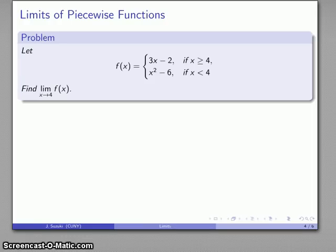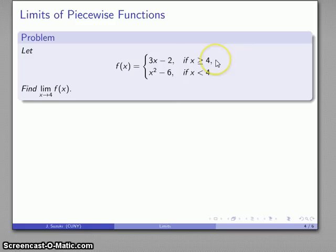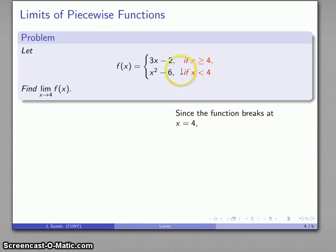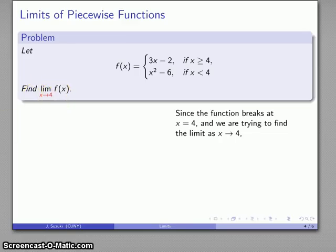One-sided limits are particularly useful for piecewise-defined functions. If I have a function f(x) defined by one rule for x ≥ 4 (say, 3x − 2) and another rule for x < 4 (say, x² − 6), I can still try to find the limit as x approaches 4. Notice that the rule changes at x = 4, so since that's where we're finding the limit, we'll need to examine the one-sided limits as x gets close to 4.